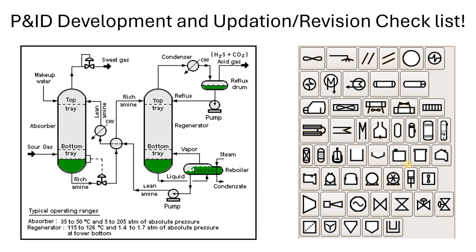Here you can see one typical PFD. If you have a basic understanding of the PFD or the process, only then can you prepare the P&ID in a better way. If you have a good understanding of the legend sheet, only then can you update the symbols in the P&ID for valves, vessels, and mechanical equipment. I hope you understood this point.